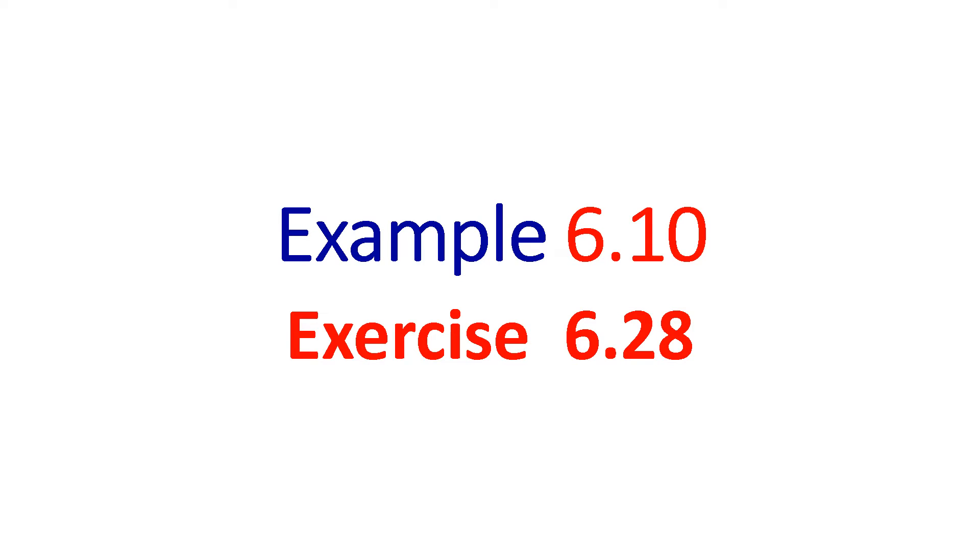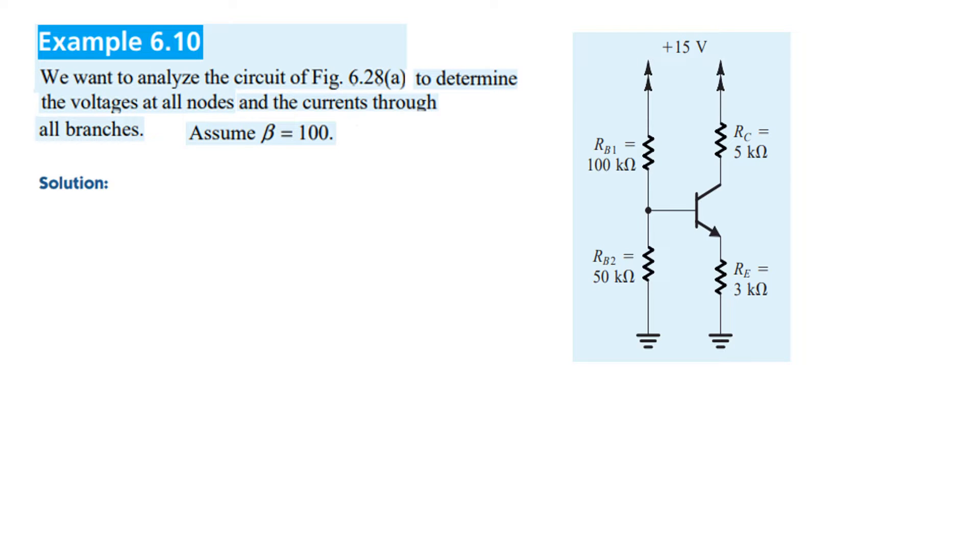In this video, we will be discussing example 6.10 and solving exercise 6.28 from Sedra's book, chapter number 6. Straight away on the question, example 6.10, we want to analyze the circuit to determine the voltages at all nodes and the currents through all branches. We need to find all three voltages and all three currents and assume that beta is 100.